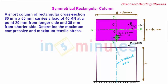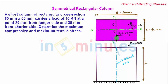Since no information is given about the orientation of the column, we consider the column such that the longer side is along the positive xx-axis and the shorter side is along the positive yy-axis. Also, we consider the load to be at the first quadrant as shown in the figure.